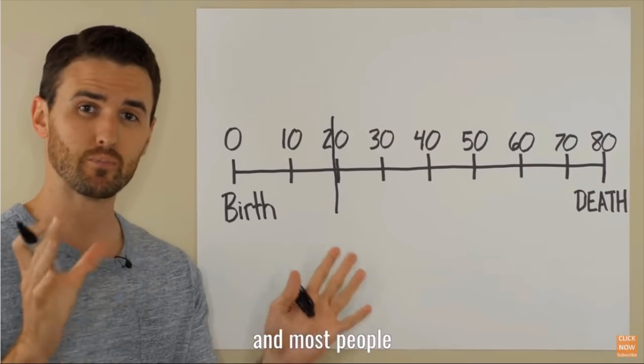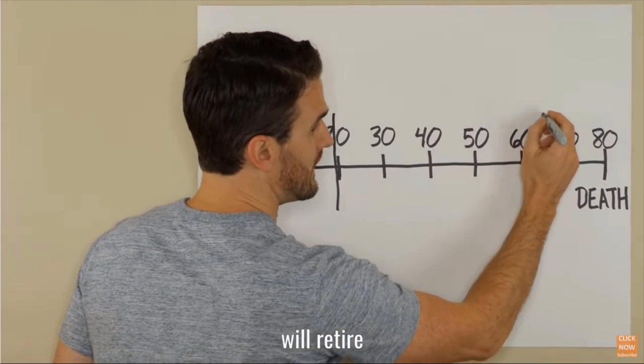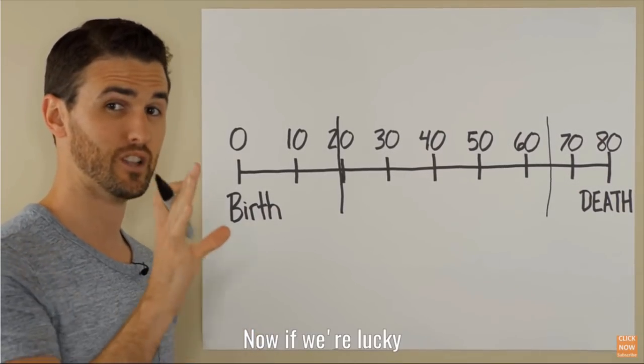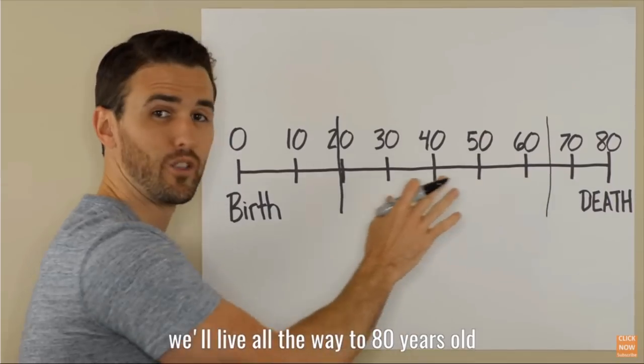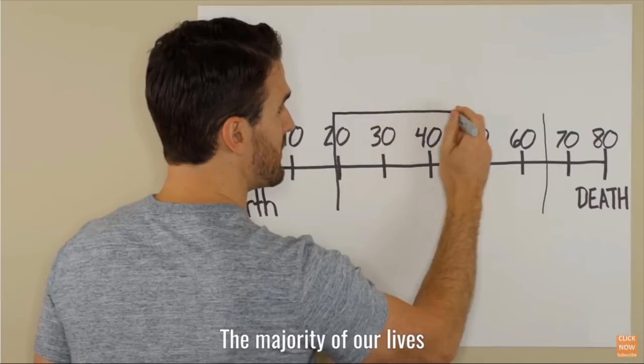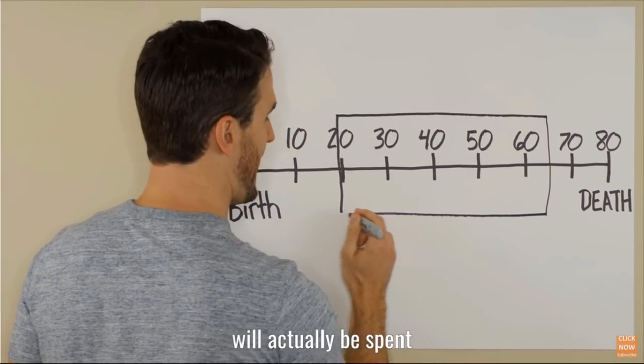At 20 years old, most people will retire at the age of 65. Now, if we're lucky, we'll live all the way to 80 years old. If you look at this, the majority of our lives will actually be spent at work.